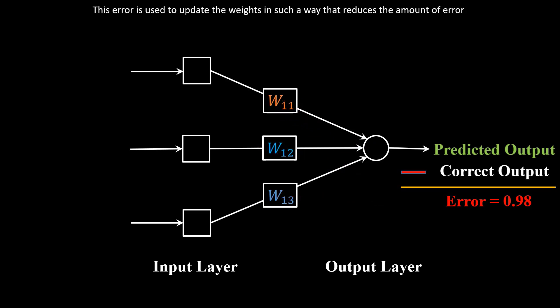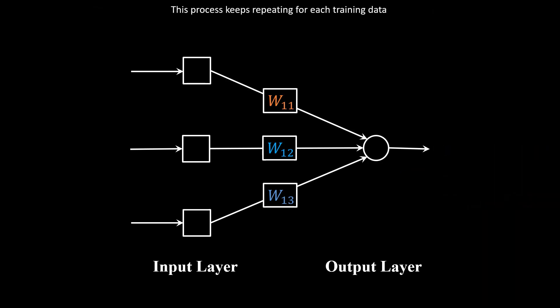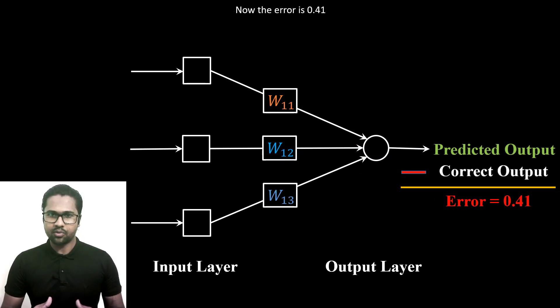The difference between the predicted output and the correct output is the error. This error is used to update the weights in such a way that reduces the amount of error. This process keeps repeating for each training data. Now the error is 0.41.